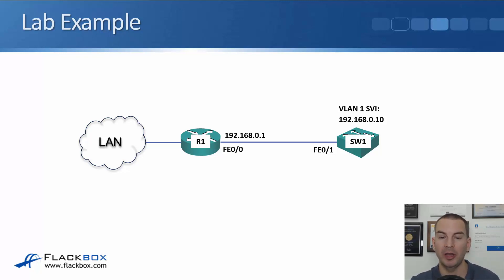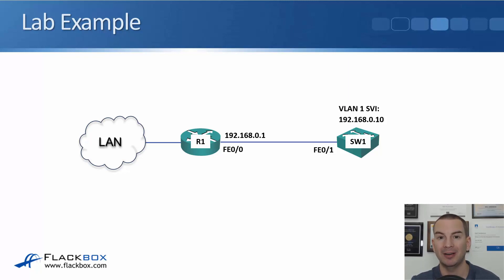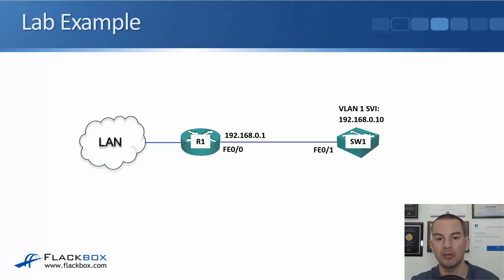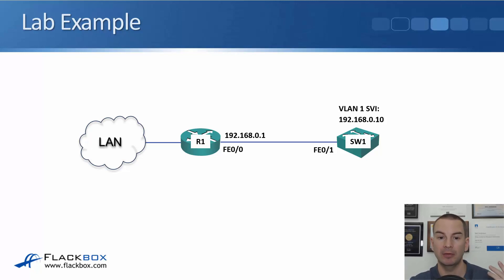Once we've done that, the switch should have connectivity to 192.168.0.1 because it's on the same subnet. We want it to have connectivity to other subnets out through the router as well, so we'll also configure the switch with an IP default-gateway address of 192.168.0.1. Let's have a look at this in the lab.